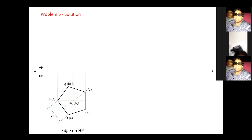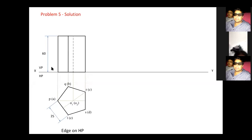Next I project all lines upward from each corner and the axis point to the XY line. From the axis, knowing the axis length is 60mm, I draw the axis length of 60mm and dimension it. Then I project this prism and finalize the front view.